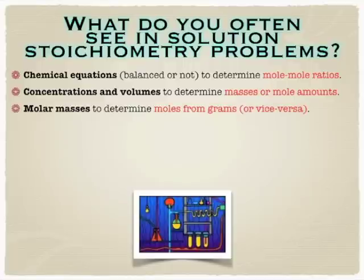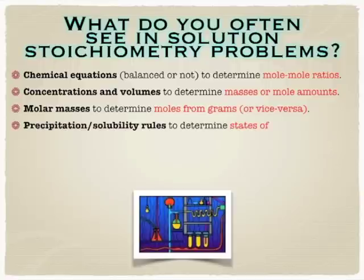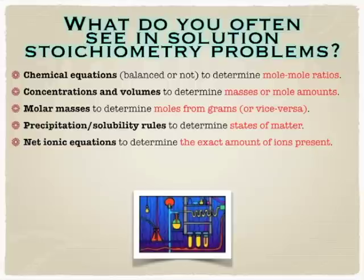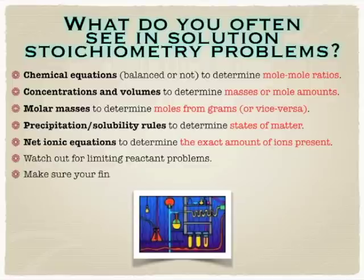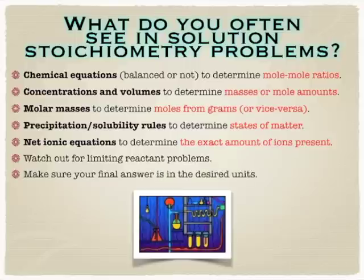Occasionally you might need a molar mass. Maybe they want you to go from moles to grams. Maybe you make a precipitate or something, which means you might need your solubility rules, precipitation. Maybe you'll need net and total ionic equations. If they ask you how many ions are present, you might have to determine how many ions are in the solution, so you might have to dissociate some stuff. You could easily make a limiting reactant problem out of this if they give you information about two reactants or three reactants instead of just one. And then just watch out for the units they're asking for.